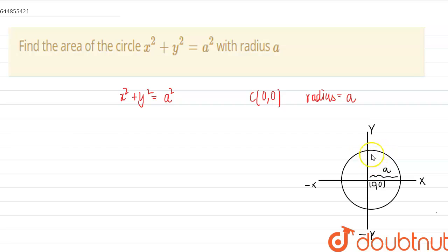So if we calculate the area of this region, that is one of this quadrant, then we can multiply that by 4 and we will have the area of the circle.